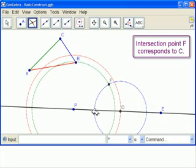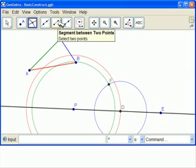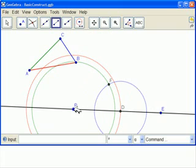And so now we have our triangle. We simply take our line segment tool, go from P to D, D to F, F to P.